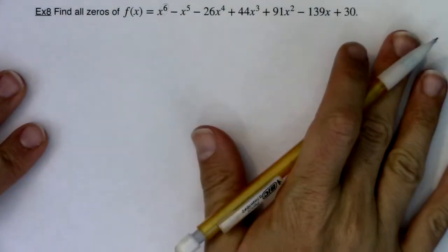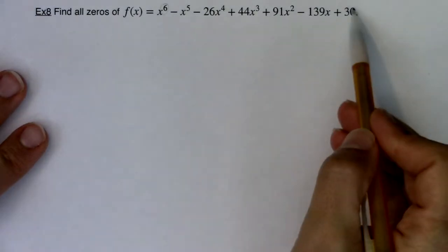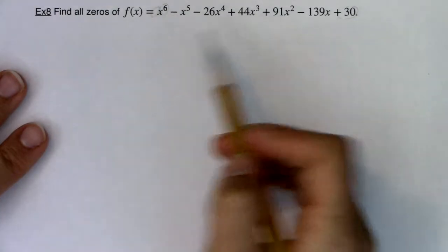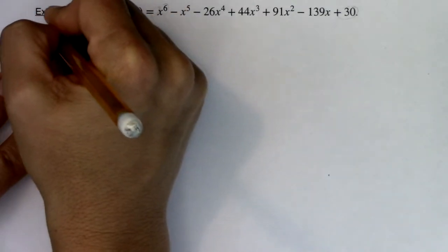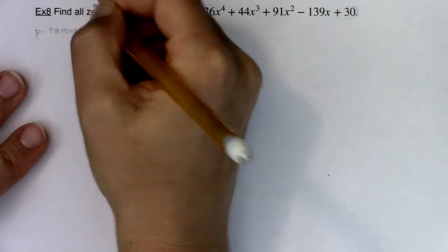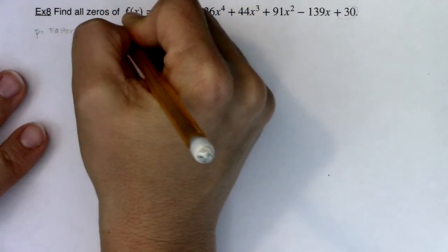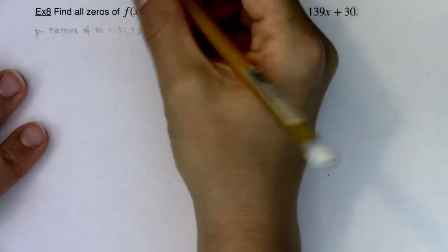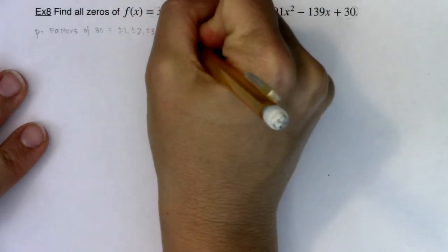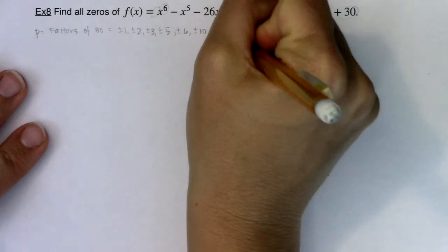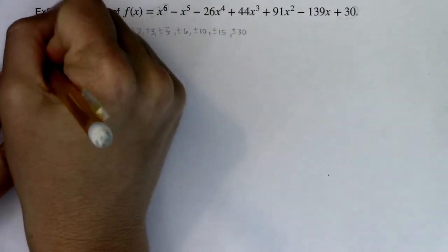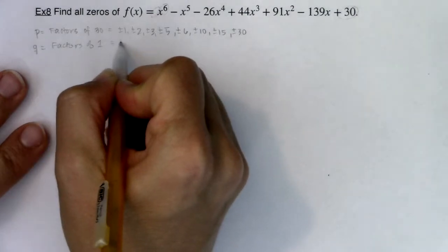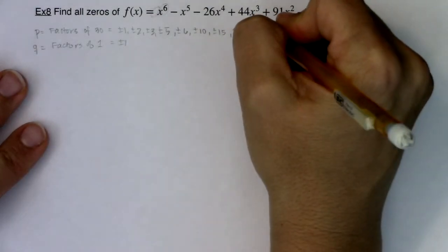If I was doing this from scratch with no calculator, I would take all the factors of 30 and divide them by all the factors of one, and those would be my list of possible rational roots. The factors of 30 would be plus or minus 1, 2, 3, 5, 6, 10, 15, 30. Q would be all of the factors of the lead coefficient, which is nice in this case, it's just 1.